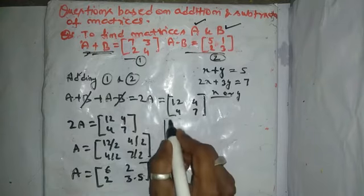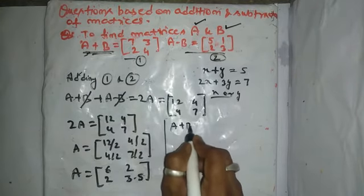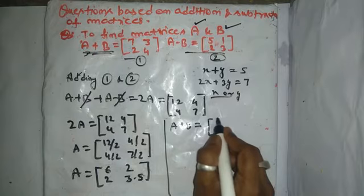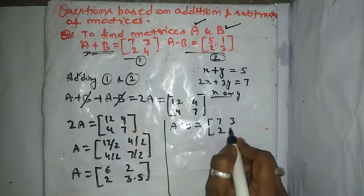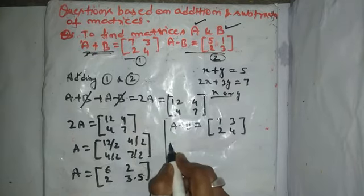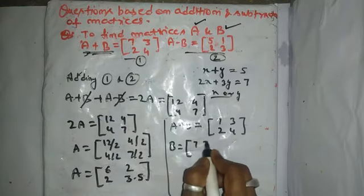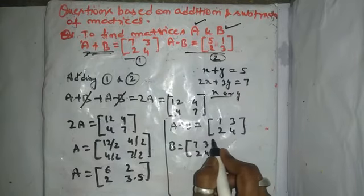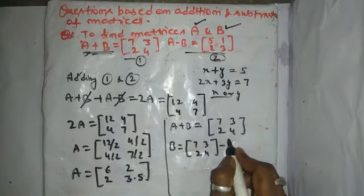See here, A plus B is given 7, 3, 2, 4. Then, B is equal to what? 7, 3, 2, 4 minus matrix A.